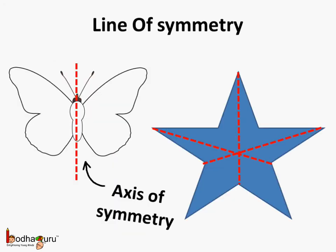So now you know what we mean by line of symmetry, or the axis of symmetry. It is a line which divides a symmetric figure into two identical halves. And also, a figure can have more than one line of symmetry.